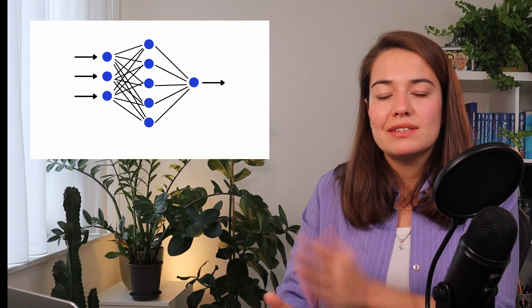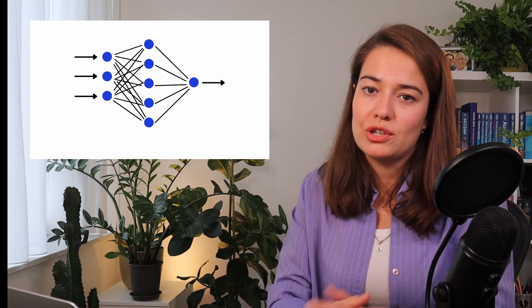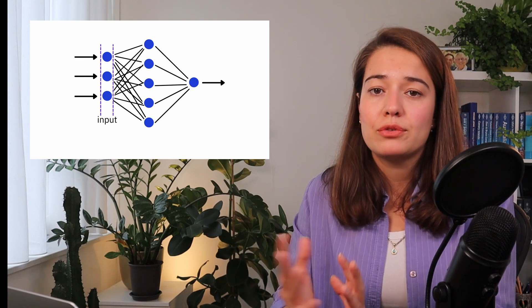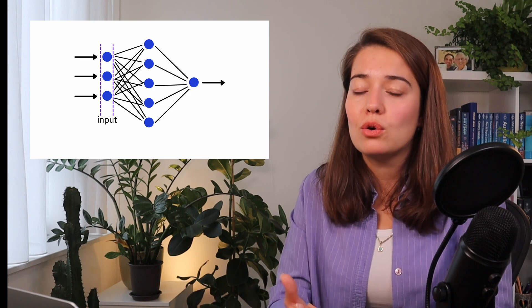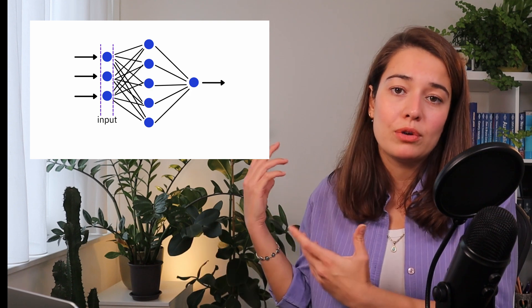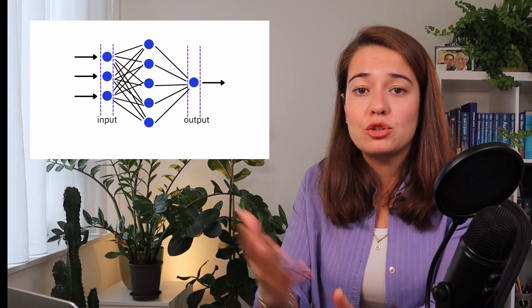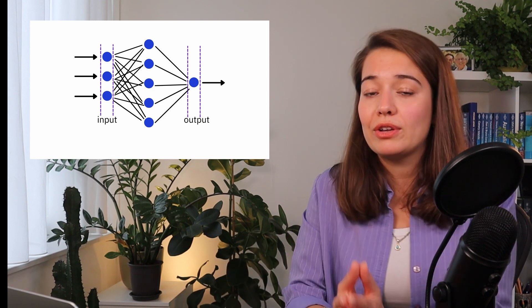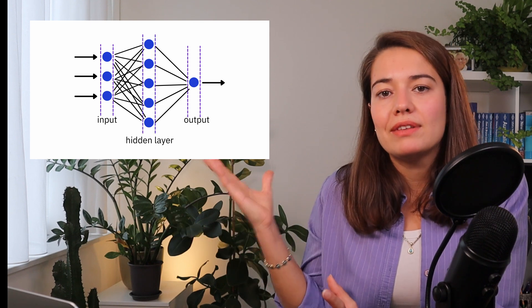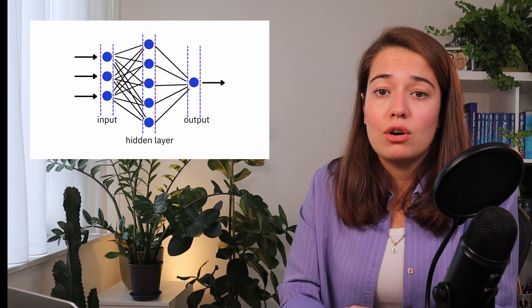Neural networks are algorithms that were created inspired by our brains. You can see in this example we have layers of neurons stacked one after each other. In neural networks we have three different layers: one is called an input layer where we accept the input, another called an output layer at the end of the network where it gives the actual prediction or outcome, and in between we have the hidden layers. All of these layers consist of neurons.